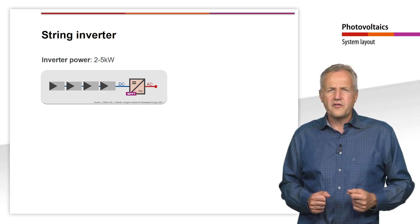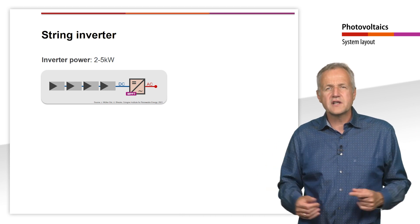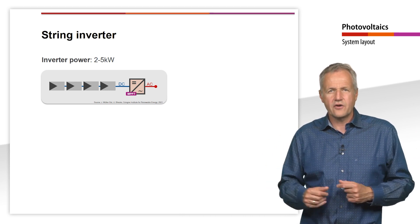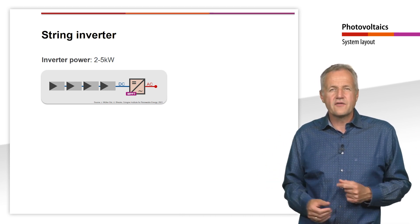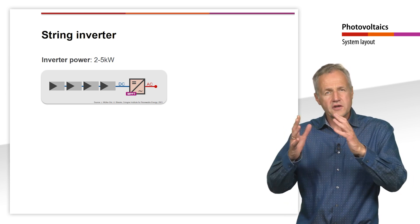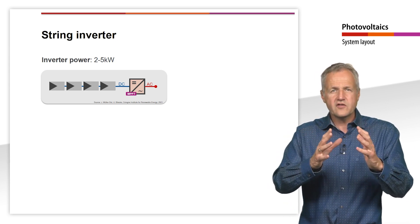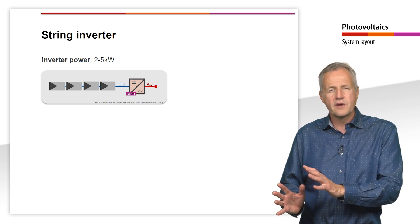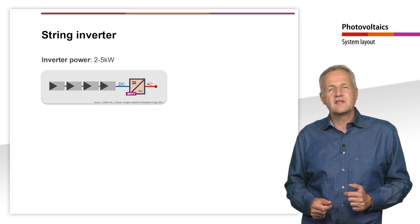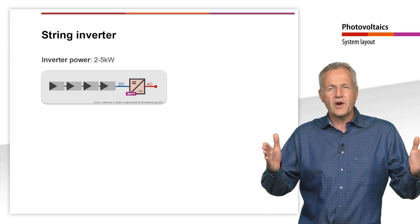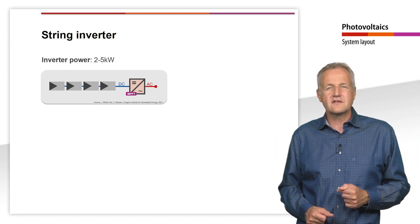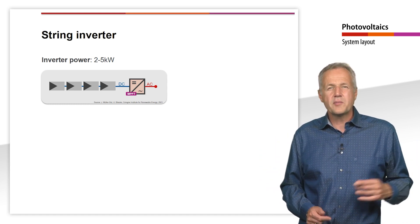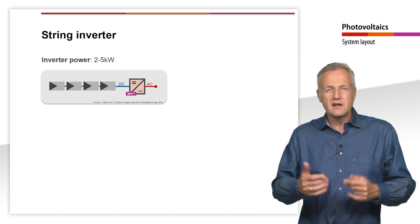The vast majority of systems on residential buildings are equipped with such a string inverter. To protect the inverter from the weather, it is usually not directly installed next to the modules but in the basement of the house or technical room. The reason for connecting the modules in series and not in parallel is the same as for connecting the cells in the module. The ohmic power losses increase quadratically with the current.